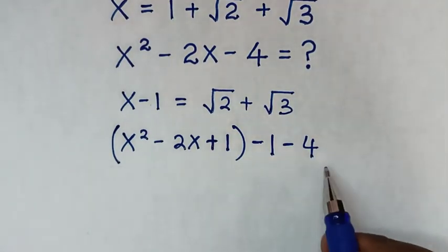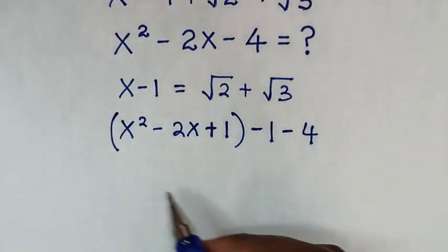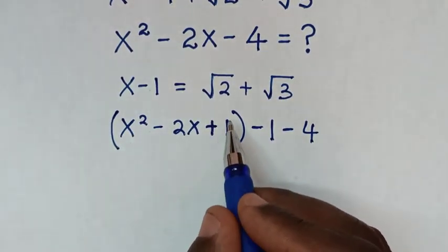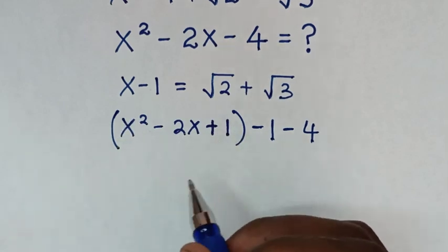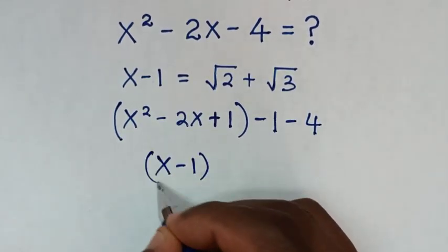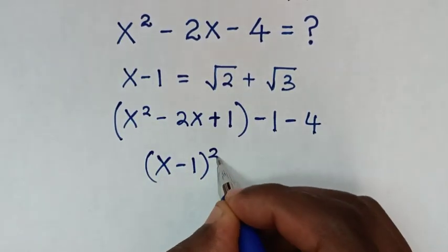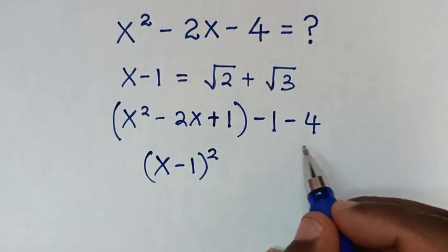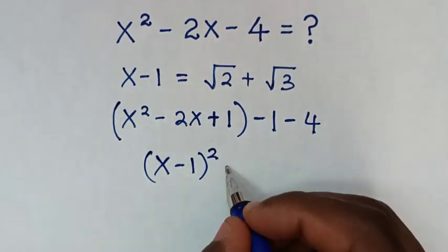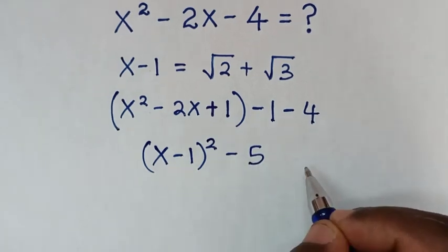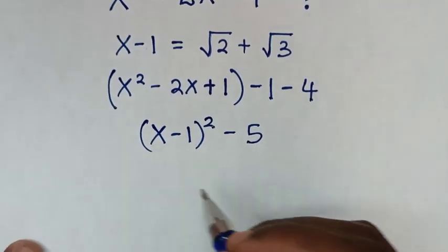So x² - 2x + 1 equals (x - 1)², and therefore x² - 2x - 4 equals (x - 1)² - 1 - 4, which is (x - 1)² - 5.